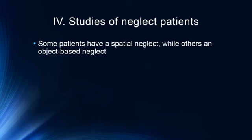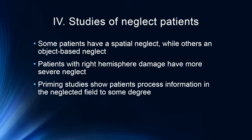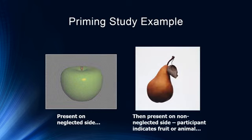Some neglect patients have a spatial neglect covering everything on one whole side, while others have an object-based neglect: they have a global ability to attend anywhere, but when they finally focus on an object, sort of half of the object disappears. Patients with right hemisphere damage tend to have a more severe form of neglect. Interestingly, priming studies show patients process information on the neglected field even though they don't pay attention to it. For example, if you present an apple on the neglected side and then present a pear on the non-neglected side asking the participant to indicate whether it's a fruit or an animal, having seen the apple beforehand they will be faster at identifying the pear, even though they won't consciously remember having seen the apple.